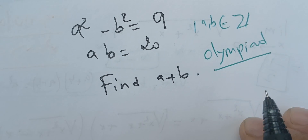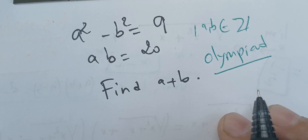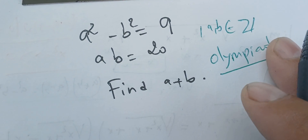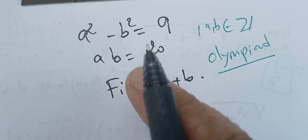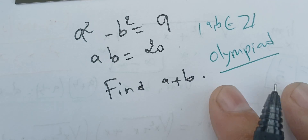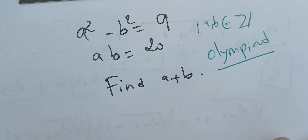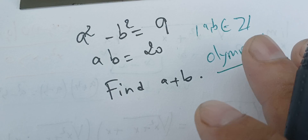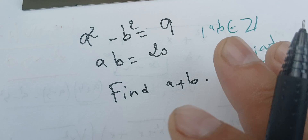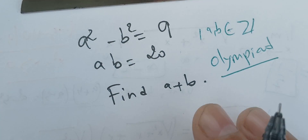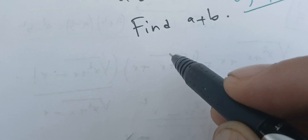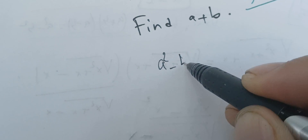We're going to solve this Olympiad question. We have some conditions: a and b are in ℂ, a squared minus b squared equals 9, a times b equals 20, and we are asked to find a plus b. We can square both sides and try to find it that way, but it will be long.